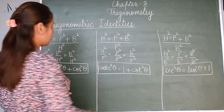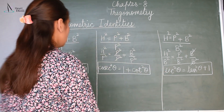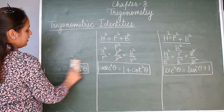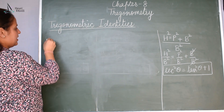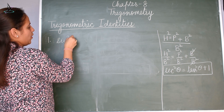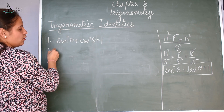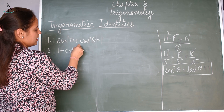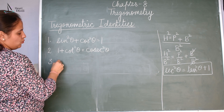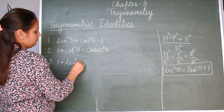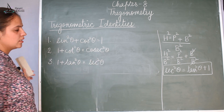So these are the three trigonometric identities which we will use to prove questions. Let us write the three identities. First: sine square theta plus cos square theta is equal to 1. Second: 1 plus cot square theta is equal to cosecant square theta. And the third one: 1 plus tan square theta is equal to secant square theta.